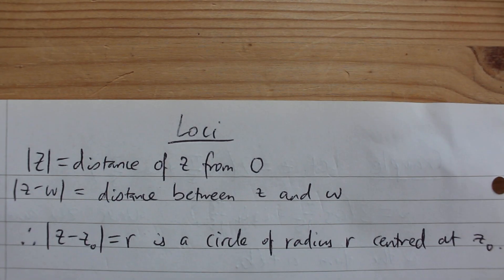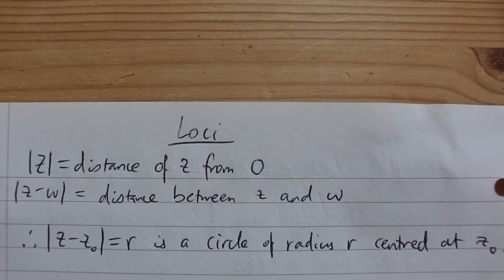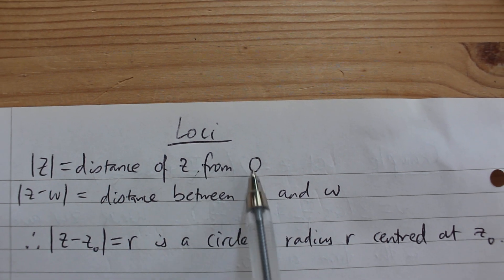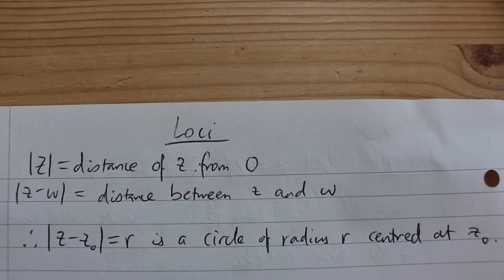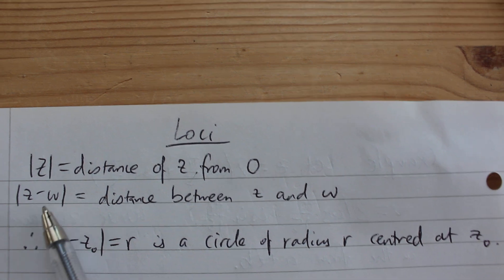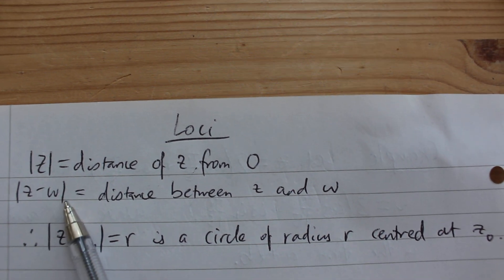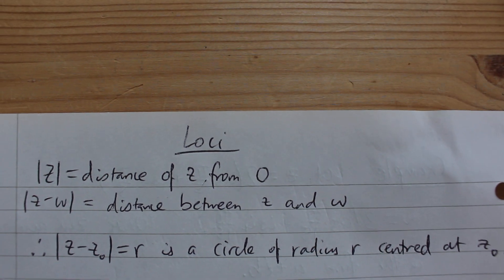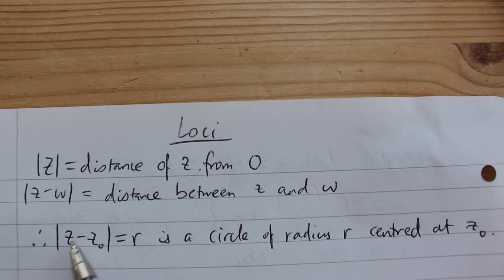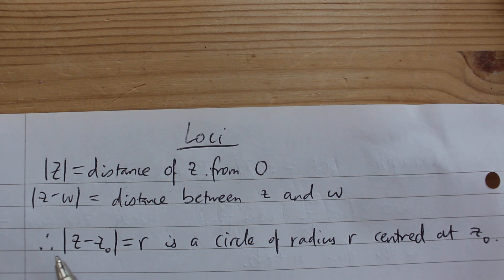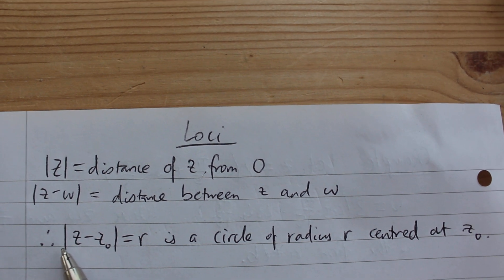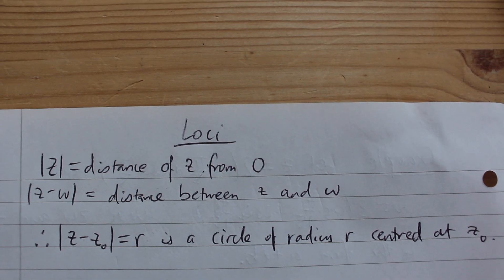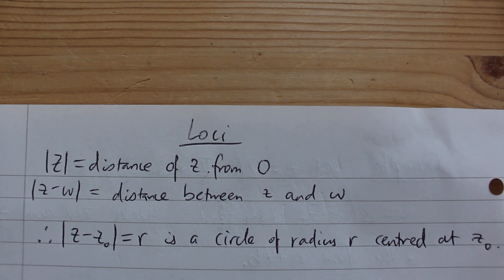This video is about loci in the complex plane. The modulus of z is the distance of z from 0, just like modulus for real numbers. The modulus of z minus w is the distance between z and w, which tells us that the locus of point z satisfying the modulus of z minus z₀ equals r is a circle of radius r centred at z₀.